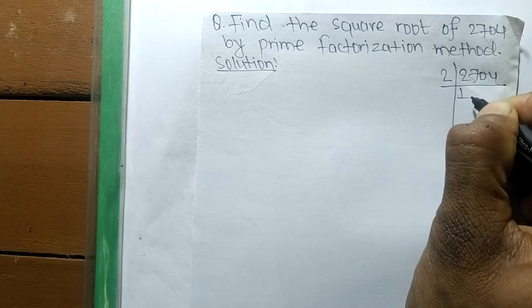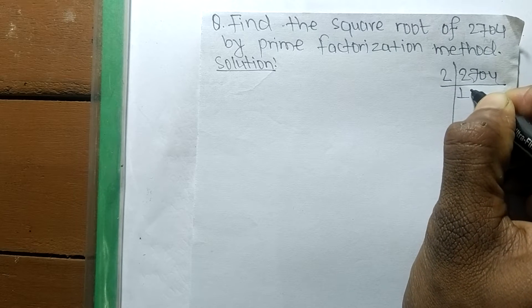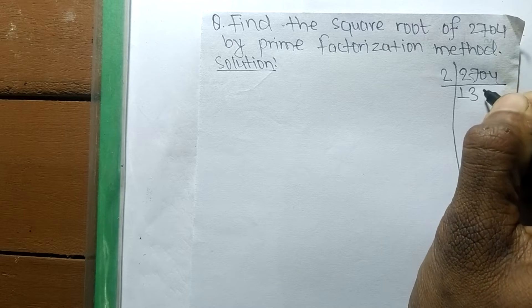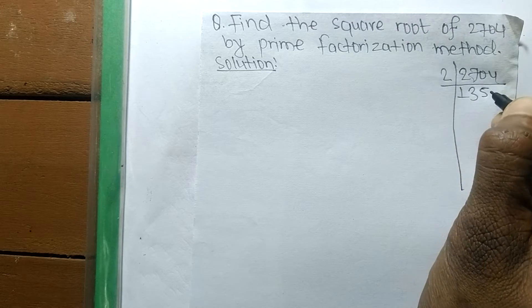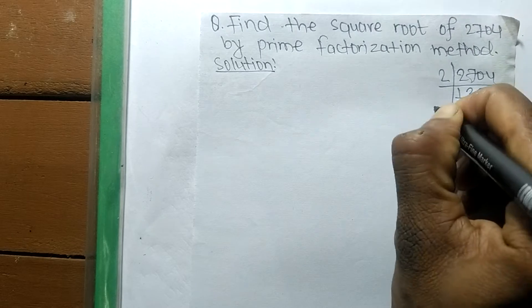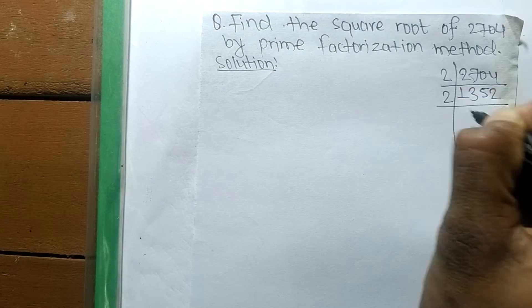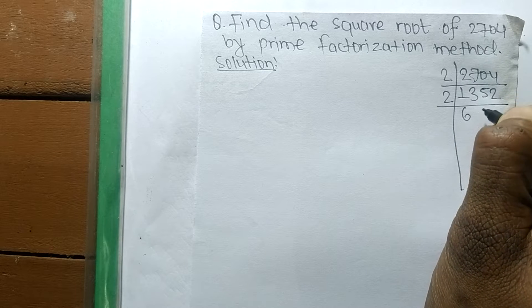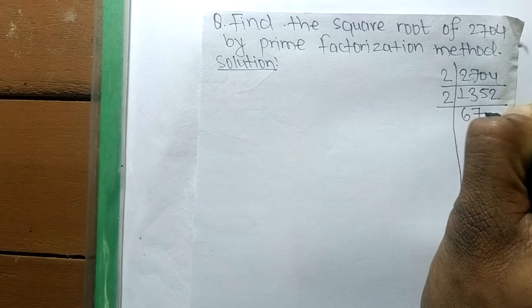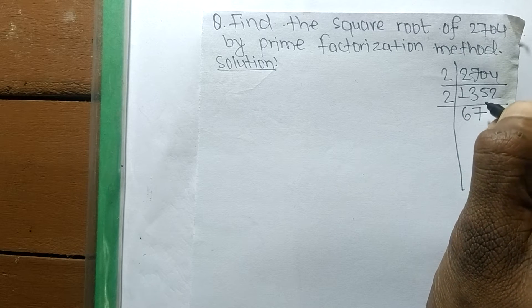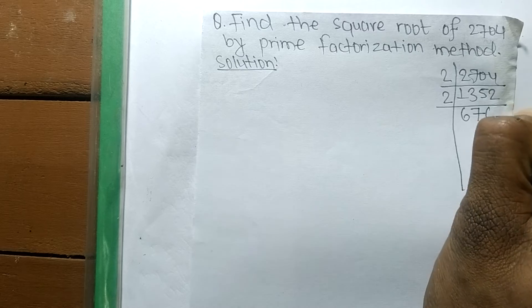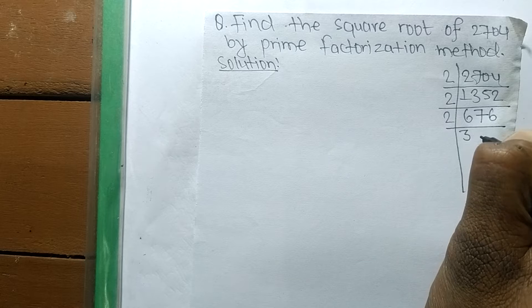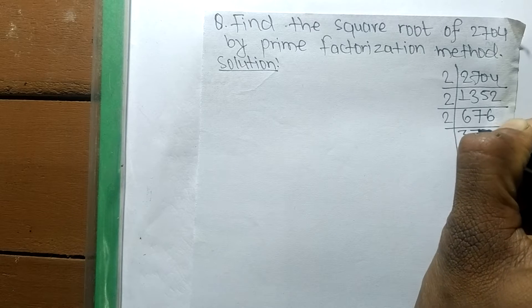We start dividing: 2 times 1 is 2, remainder 1. Bring down 0, making 10. 2 times 5 is 10, and 2 times 2 is 4. Again, 2 times 6 is 12, remainder 1. Bring down 5, making 15. 2 times 7 is 14, remainder 1. Then 12: 2 times 6 is 12.